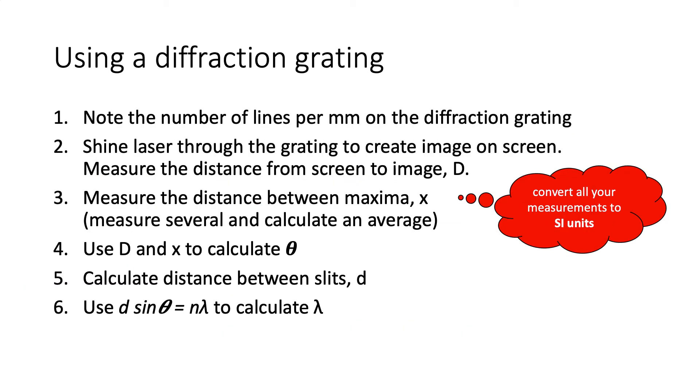Here are the steps. You note the number of lines per millimetre on the diffraction grating and shine a laser through the grating to create a series of maxima on the screen and measure the distance from the screen to the image big D. Actually, what I would do is to set the distance to be a straightforward number, like one metre, in order to make the calculations a bit simpler. Once you've got the maxima on the screen, you measure the distance between the maxima. The easiest way to do that is to measure several and then calculate an average from that.